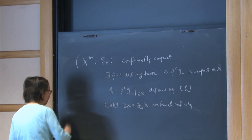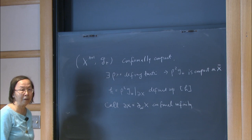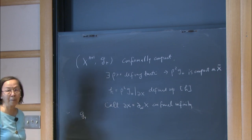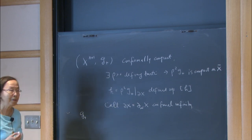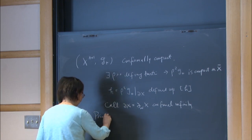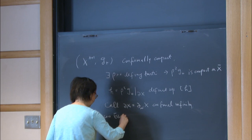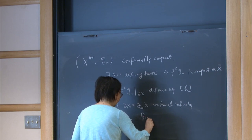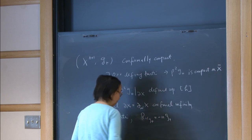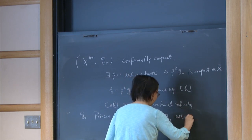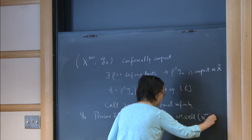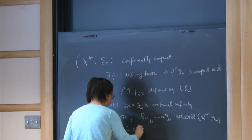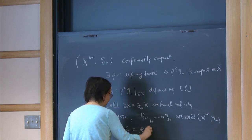The particular class of conformally compact manifold we will deal with is when G plus satisfies the additional property of being a Poincaré-Einstein manifold. In my notation, I normalize so that the Ricci tensor equals minus n times G plus. We call this (X^{n+1}, G plus) a conformally compact Einstein manifold, or CCE manifold.